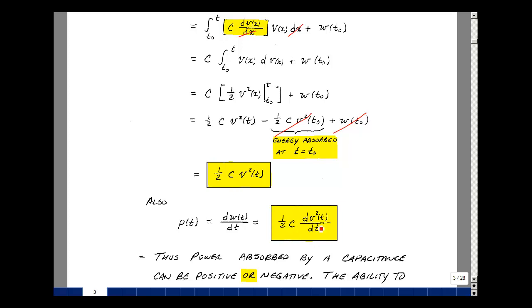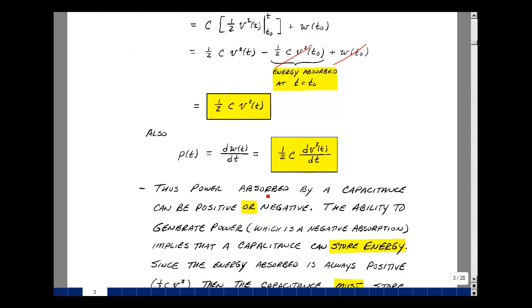So you have 1 half C, and then the derivative of the quantity V squared DT. It's not the second derivative, it's just simply the derivative of a function squared. Think of like a sine wave. If you were to square it, you'd get a cosine wave of twice the frequency, plus the scalar. This term can be positive or negative. The power absorbed by a capacitance can be either positive or negative.